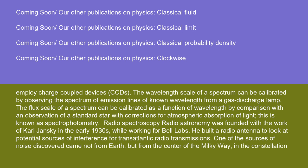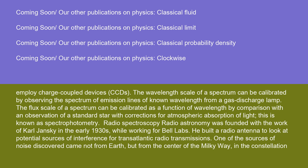Radio spectroscopy radio astronomy was founded with the work of Karl Jansky in the early 1930s while working for Bell Labs. He built a radio antenna to look at potential sources of interference for transatlantic radio transmissions. One of the sources of noise discovered came not from Earth, but from the center of the Milky Way in the constellation Sagittarius. In 1942, J.S. Hay captured the sun's radio frequency using military radar receivers. Radio spectroscopy started with the discovery of the 21-centimeter HI line in 1951.